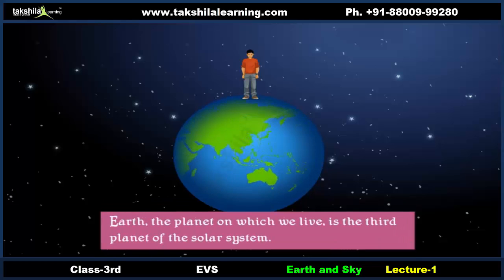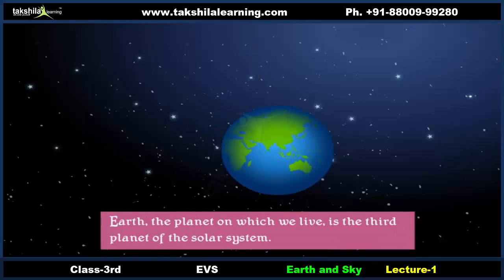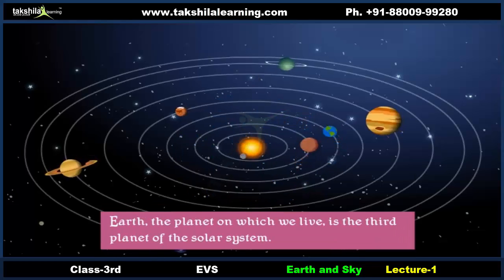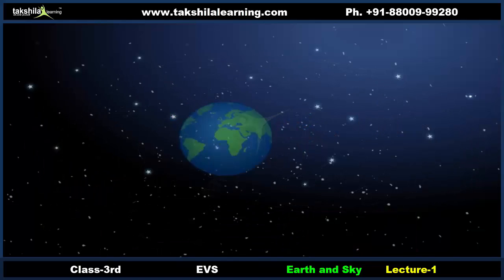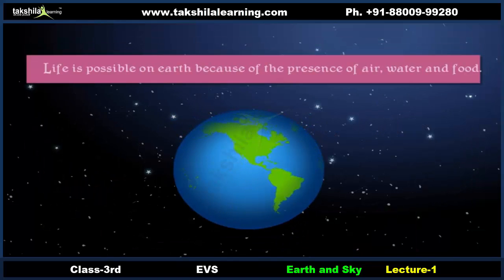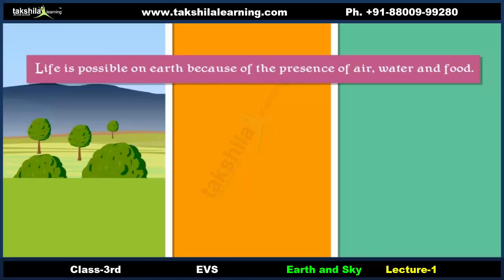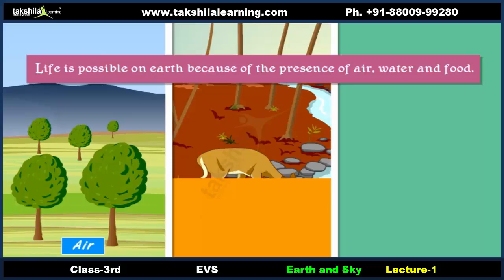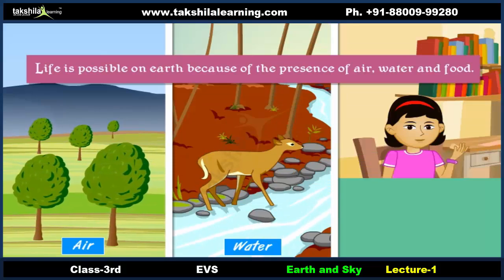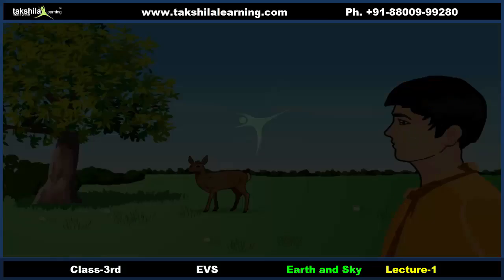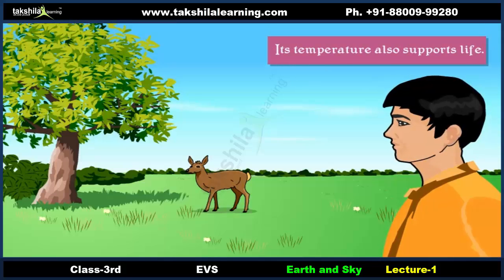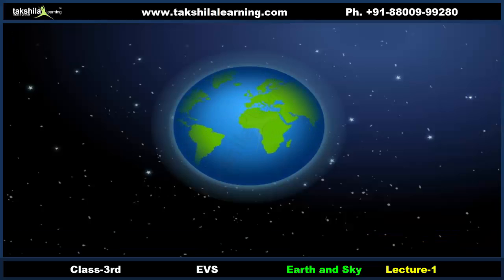The planet on which we live, Earth, is the third planet of the solar system. Life is possible on Earth because of the presence of air, water, and food. Its temperature also supports life.